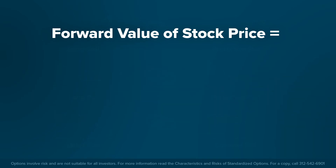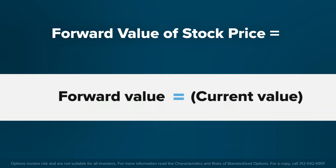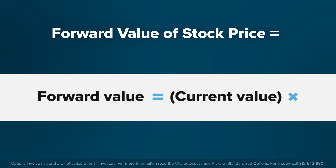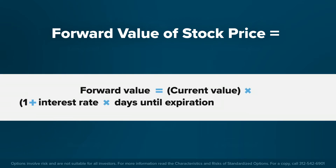We can calculate the forward value this way: the forward value equals the current value multiplied by 1 plus the interest rate, times the days until expiration divided by 365, less dividends.